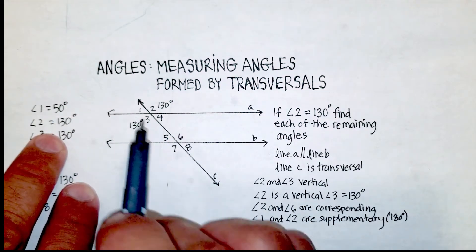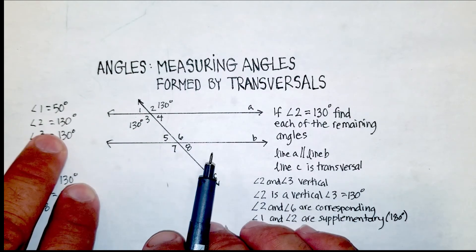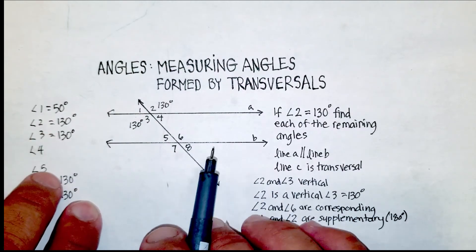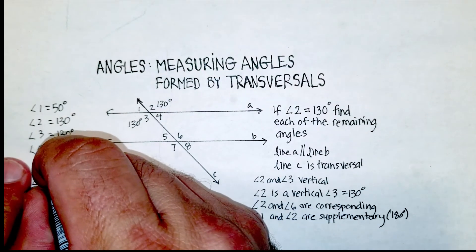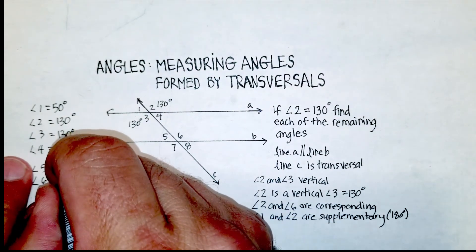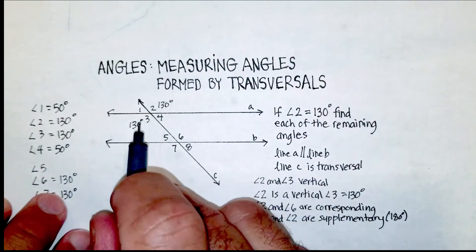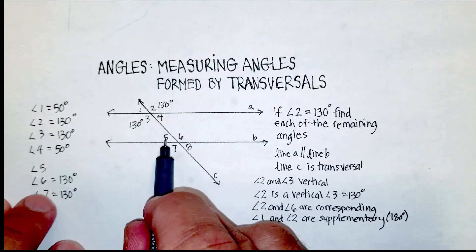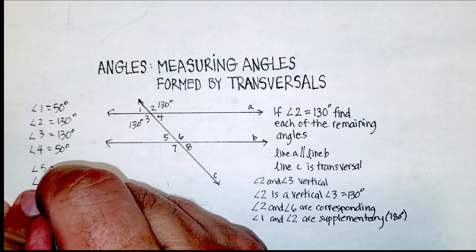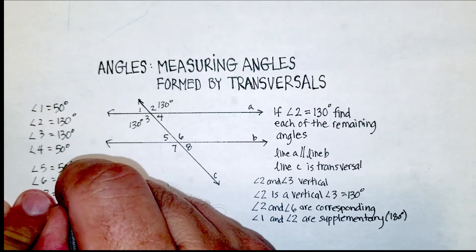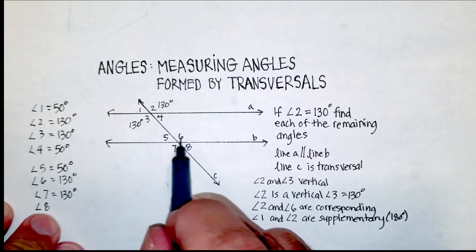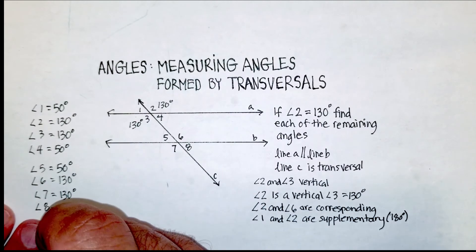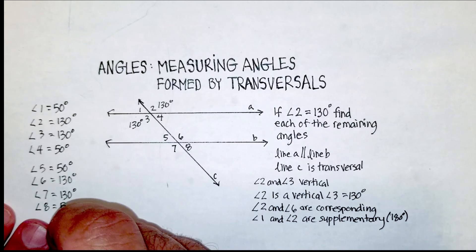We can use the exact same logic to fill in all the rest of these angles now. So one and four are vertical, which means congruent. One is corresponding to five, so that is also congruent. And five is vertical to eight, which is also congruent.